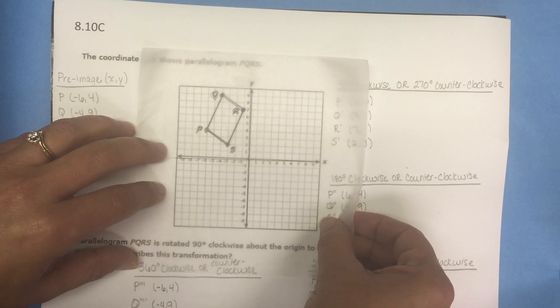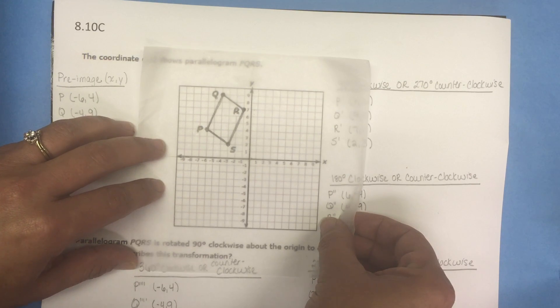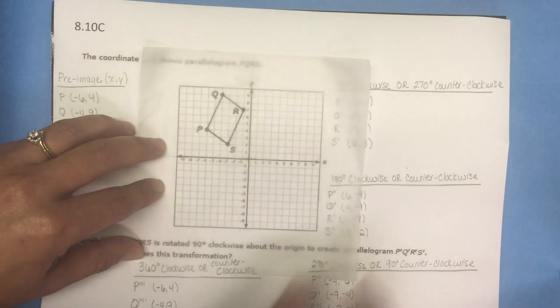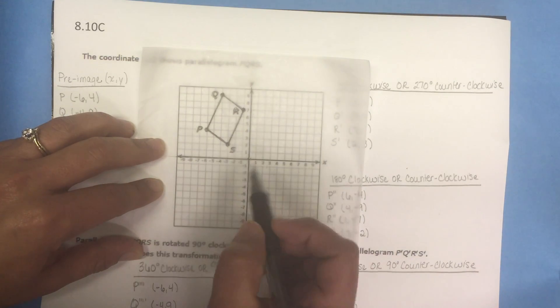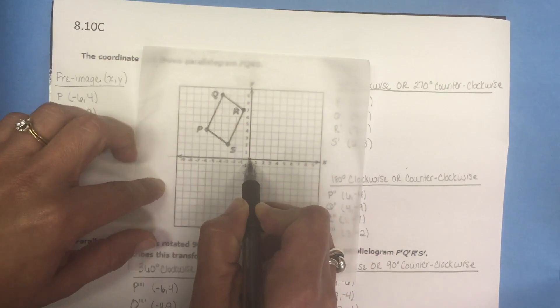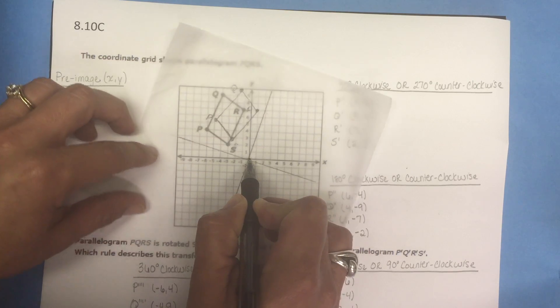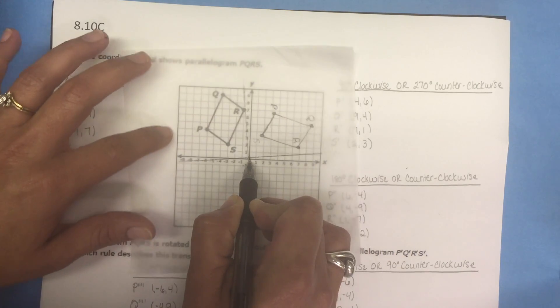So let's look. If we're gonna rotate 90 degrees clockwise, I'm gonna take a pencil tip, pen tip, finger tip, something, and place it right here on the origin of the coordinate plane.